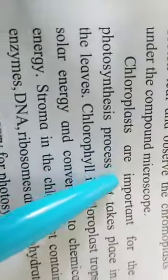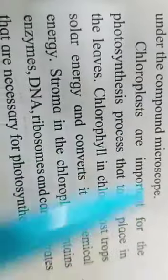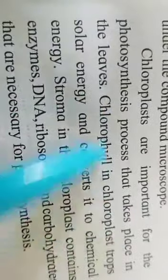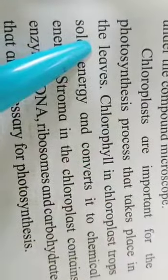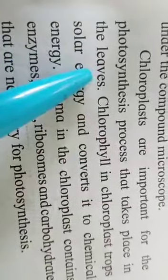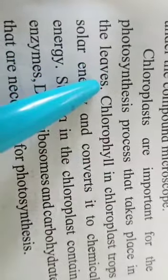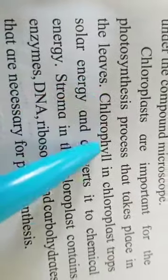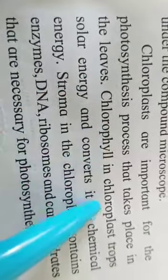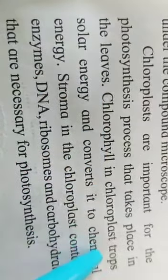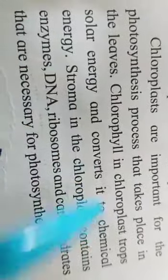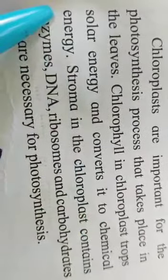Stroma are important for the photosynthesis process that takes place in the leaves. Chlorophyll in the chloroplast absorbs the solar energy and converts it into chemical energy.